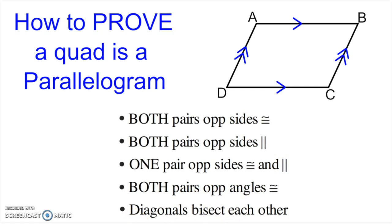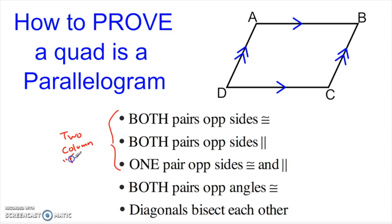Depending on the type of proof you're doing, some of these turn up more than others. These first three are generally the ones you're going to use if you're doing a two-column or formal proof. So if you're doing a formal proof and you're not working with coordinates, then you're likely going to be doing one of these three. This last one is my favorite, and parallel or congruent works great too.